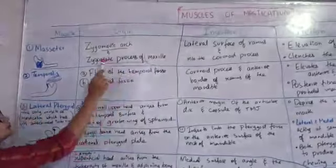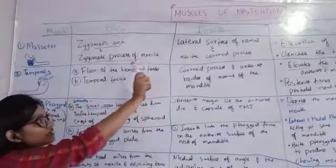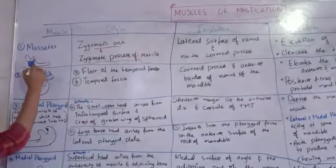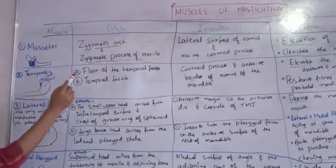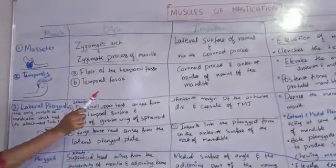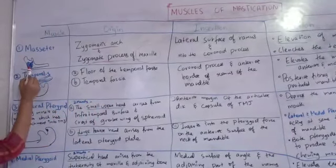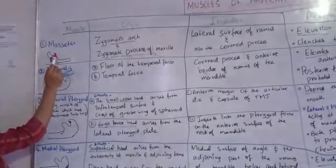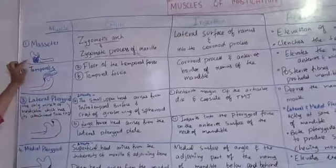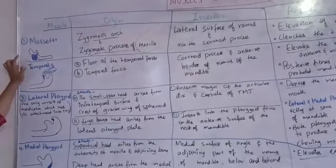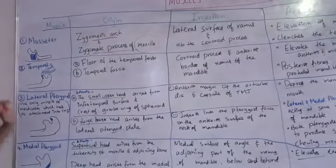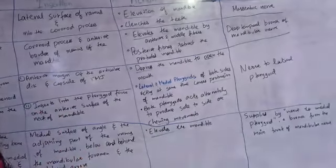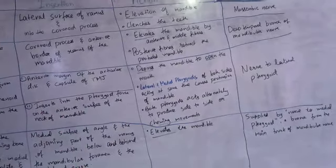The zygomatic process. The zygomatic arch is located here. Its insertion is into the lateral surface of the ramus and the coronoid process. Its action: it elevates the mandible — it lifts the mandible upward.